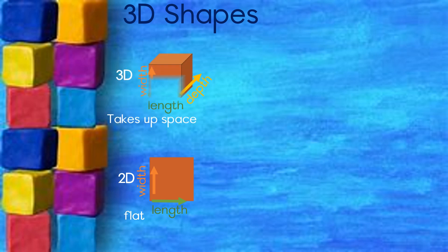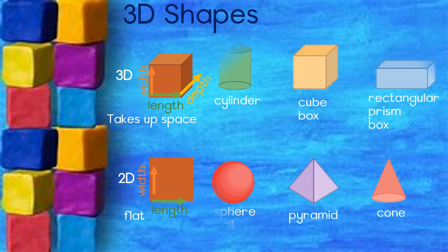3D shapes have 3 dimensions: width, length, and depth. And they take up space. Here are some 3D shapes.